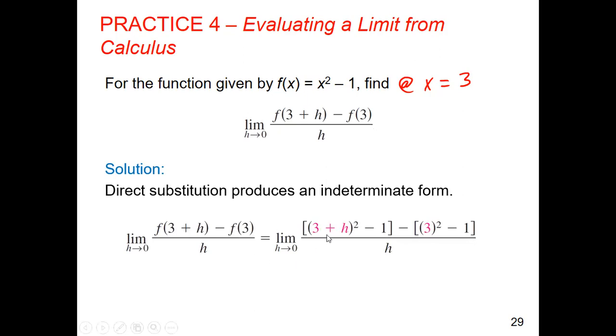When I have three plus h squared, that means that there's two of them and I have to do FOIL. I'm going to do FOIL and I'm left with nine plus six h plus h squared. I'm going to distribute my negative. Remember, when there's more than one term, the negative goes to both terms. So it became a negative nine and a positive one.